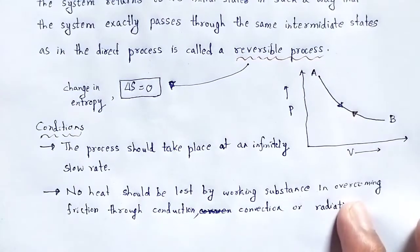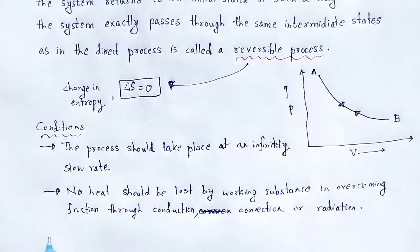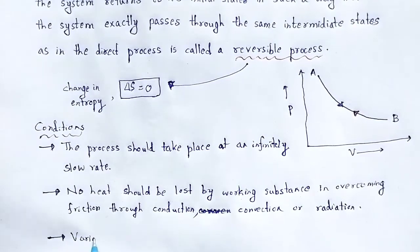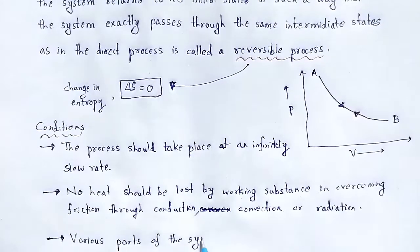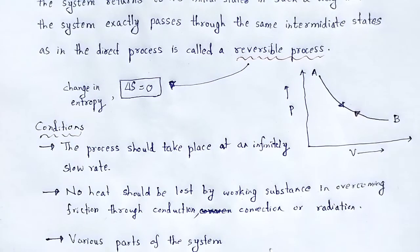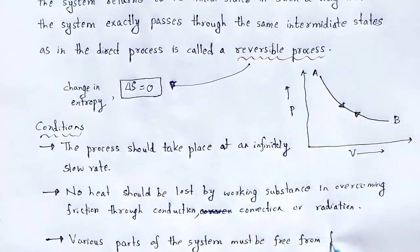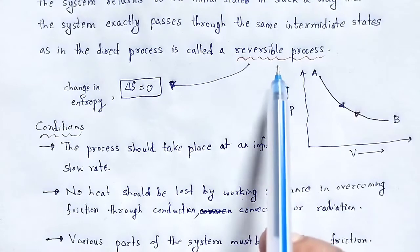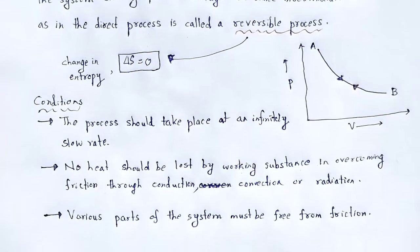Through heat phenomena like conduction, convection, and radiation, there will be no heat lost during that process. Also, various parts of the system must be free from friction — they should be frictionless — otherwise heat will be lost in the form of friction. That is why for a reversible process almost all parts are said to be frictionless.